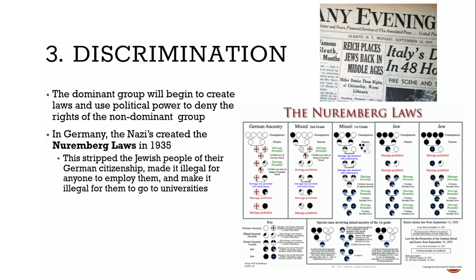Most genocides — the Holocaust being one — the world knew what was going on. The world watched each stage happening. Germany did not have a wall surrounding it; every country in the world knew what Germany was doing, yet they didn't do anything. The Nuremberg Laws also dictated who you were allowed to marry, depending on how much German or Jewish ancestry you had, restricting Jewish people from spreading into the rest of the population.